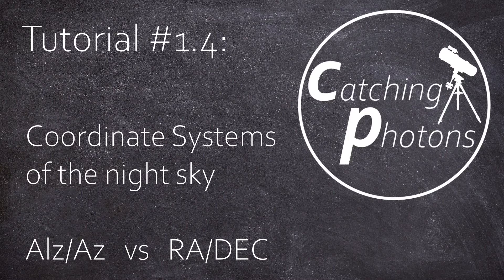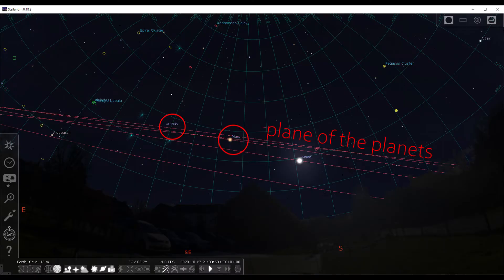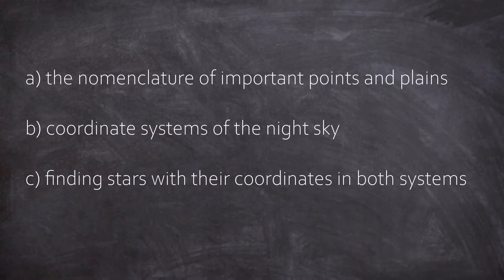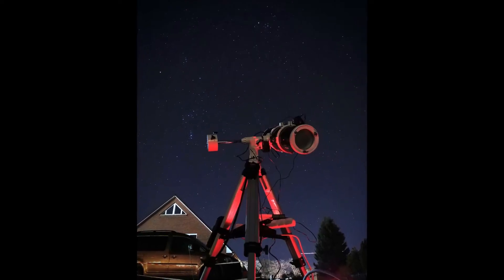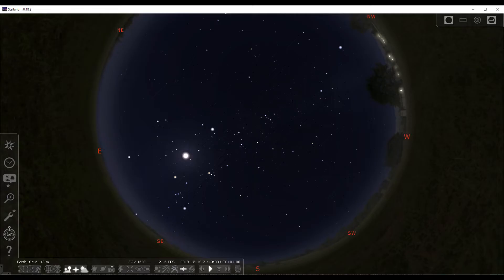Hi, it's Chris. Welcome back to another episode of this tutorial chapter. Last time we had a brief look at the night sky for first orientation. This time we want to focus on: A) the nomenclature of important points and planes, B) the coordinate systems of the night sky, and C) finding stars with their coordinates in both systems. Technical terms like azimuth or vernal equinox should be sorted out before you start your first session.